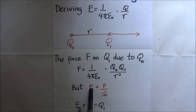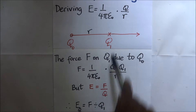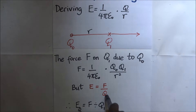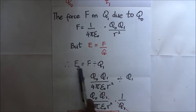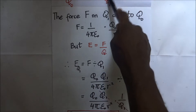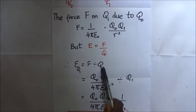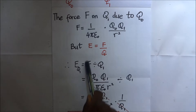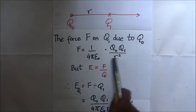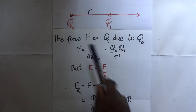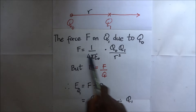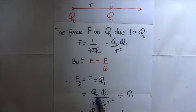The intensity E at Q1 is going to be the force acting at Q1 divided by the charge Q1. As illustrated, the intensity due to Q1 is equal to the force acting on Q1 divided by charge Q1. The force is what we already derived, so we substitute for F.